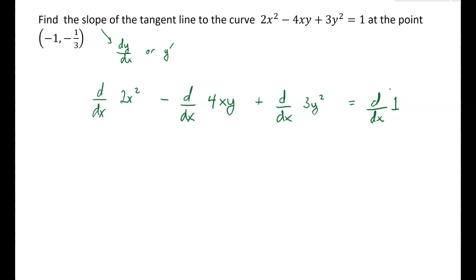This is what it means to differentiate implicitly. We've got four derivatives to find, and some are easy and some are a little trickier. The easiest is probably the right-hand side — the derivative of any constant is zero. The first term is also fairly easy: the derivative with respect to x of 2x squared is just 4x.